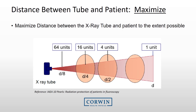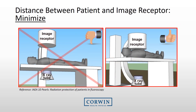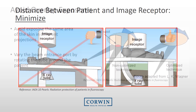When positioning the patient and the x-ray tube, maximize the distance between the tube and the patient. Doubling the distance from the patient to the tube decreases skin exposure by up to a factor of 4. Similarly, minimize the distance between the patient and the image receptor.